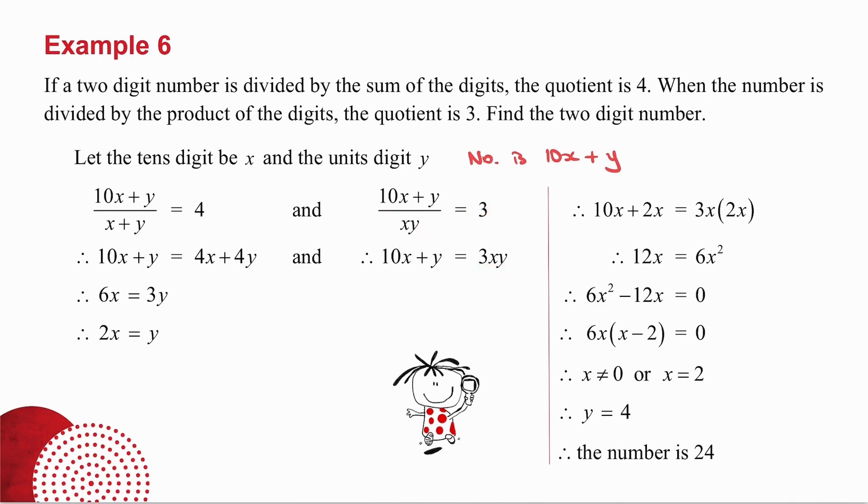Now this Y here is the same as these Y's here. So in place of these Y's, I put 2X and I get that. Multiply the brackets, set up the quadratic, factorize and get your solutions.